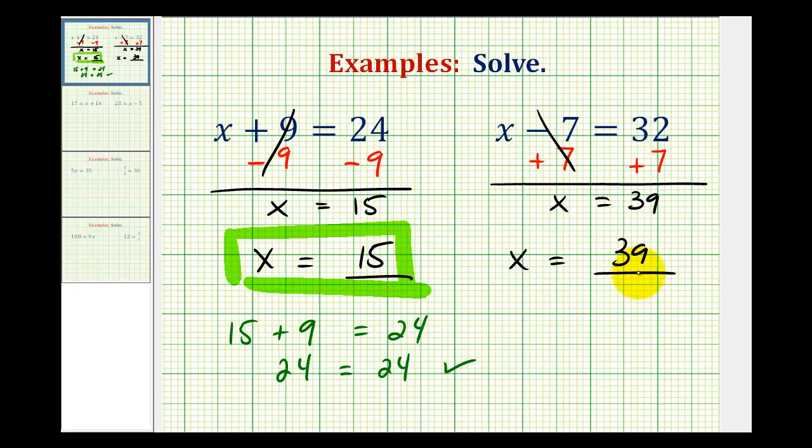So x equals 39 is the solution to the equation. Let's go ahead and check this, which means if we substitute 39 for x in the original equation, it should satisfy the equation. So we'd have 39 minus 7 equals 32. And 39 minus 7 is 32. Therefore, our solution is correct.